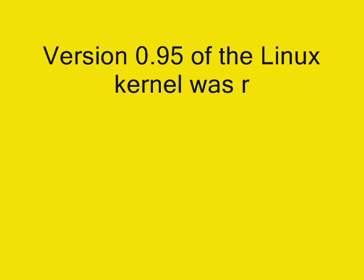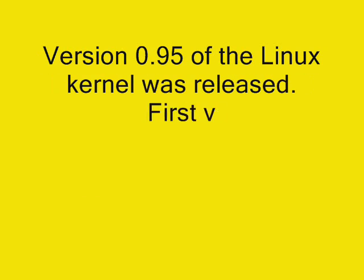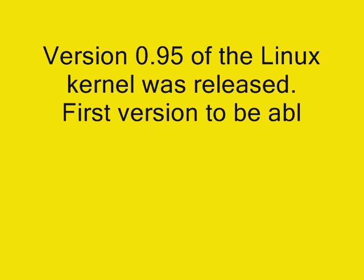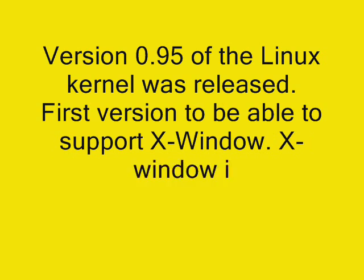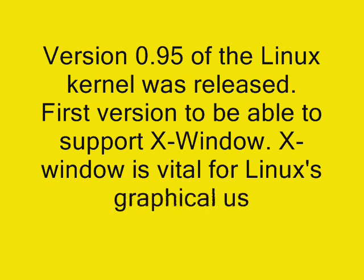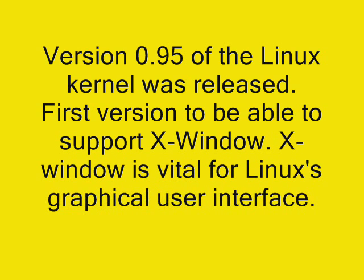March 1992: Version 0.95 of the Linux kernel was released. This was the first version to be able to support X Window. X Window is vital for Linux's graphical user interface.